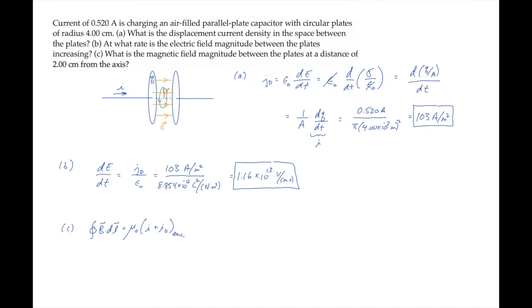So the integral of B dot dl becomes B times the circumference of that circular path. The current enclosed by the path is the current through this shaded area. There's no conduction current and only part of the displacement current is enclosed by the loop. So we have μ₀ times the enclosed current — the displacement current density times the area inside that green loop, π times little r squared. We can cancel the π and one of the r's, and solve for the magnetic field magnitude B: it equals μ₀ times the displacement current density over 2 times the loop radius r.